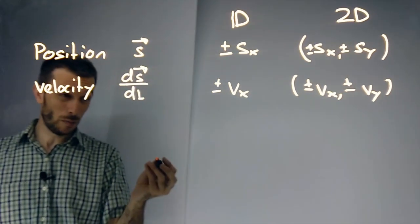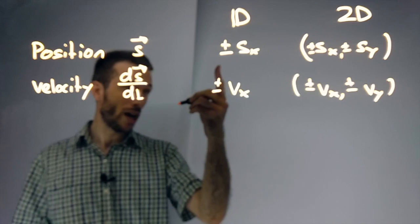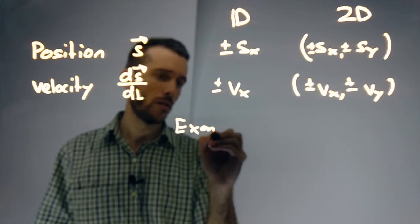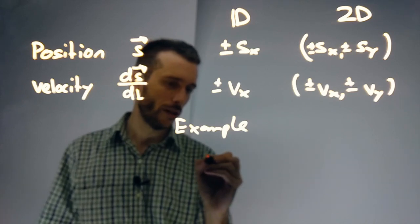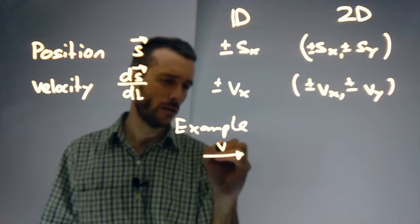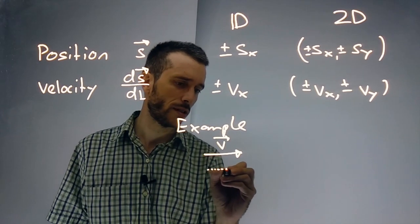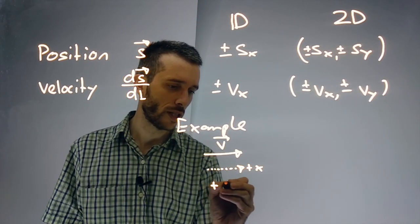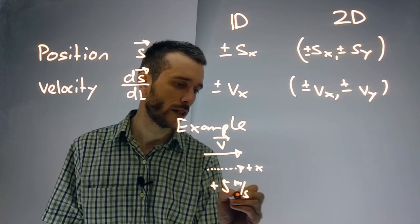What does this mean in practice? We could have had a velocity going this way, while our plus direction was this way, plus x. And then I would just have written plus 5 meters per second, for example.